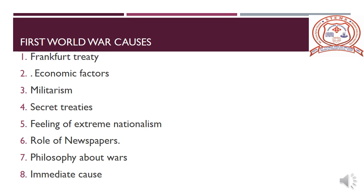The fourth reason was secret treaties and groupism. There were two groups formed. One group consisted of Germany, Austria, Hungary, Bulgaria and Turkey. The other group consisted of England, France, Russia and Japan. Thus, a feeling of mistrust, fear and hatred developed among these nations.